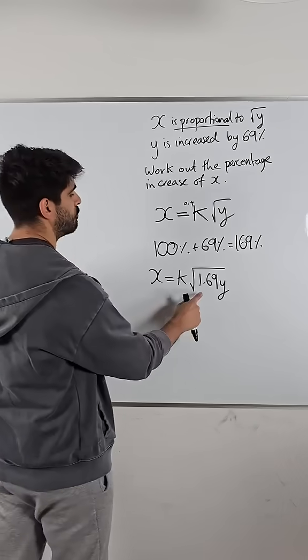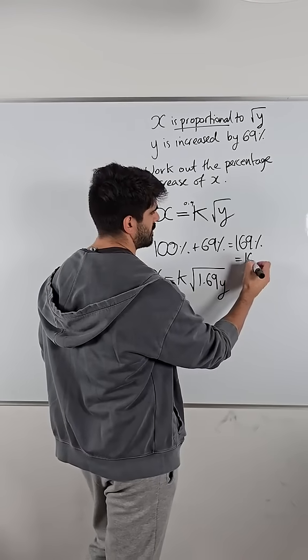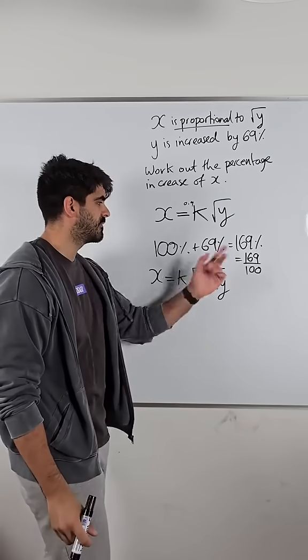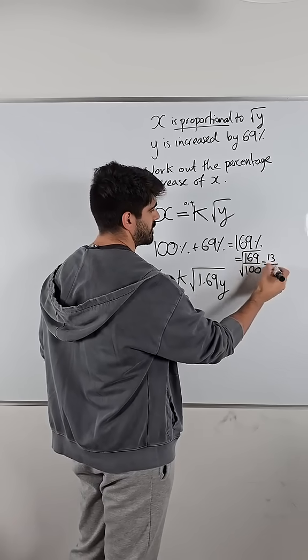So we need to somehow root 1.69. And we can do that easily by thinking of this as a fraction. Instead of converting it to a decimal, by thinking of it as a fraction, it's much easier. So by rooting this, we root the top and the bottom. That's 13 over 10.